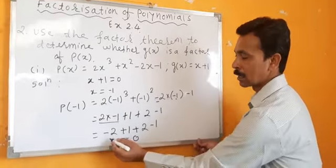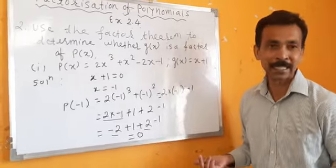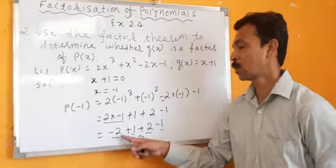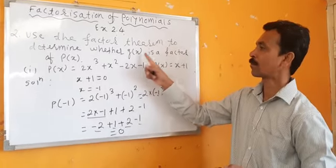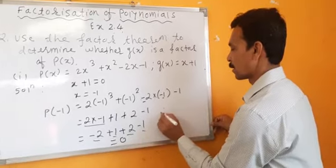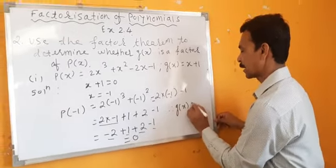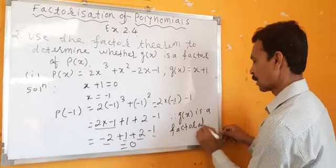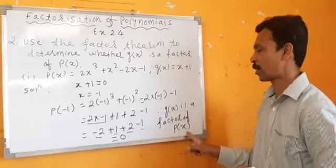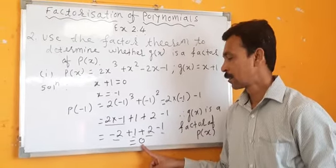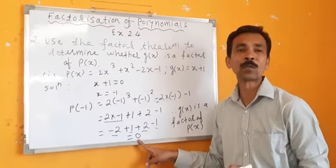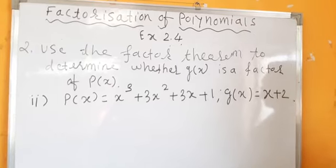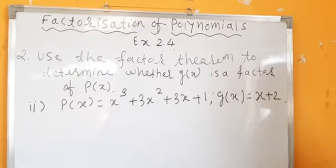Minus 2 and plus 1 don't fully cancel but combined with plus 2 minus 1, the answer is 0. Since the remainder is 0, g of x is a factor of p of x. Therefore, g of x is a factor of p of x because our remainder is 0.